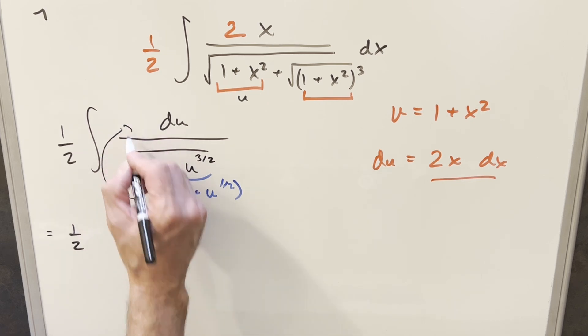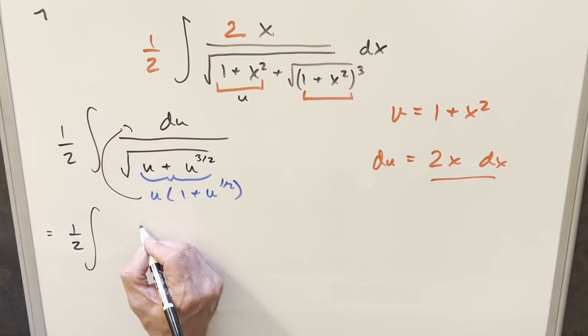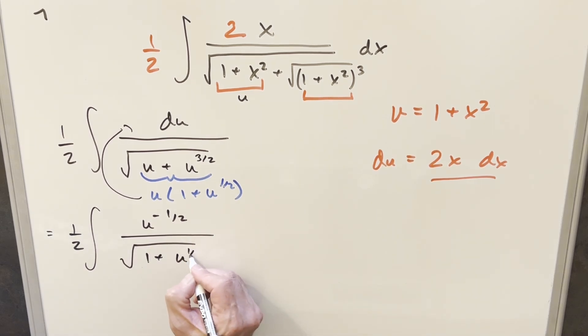But then we'll bring it all the way into the numerator. So what's going to happen is here, this is going to become u to the minus 1 half. And then this is still going to be square root 1 plus u to the 1 half. But now I'm set up for another substitution.